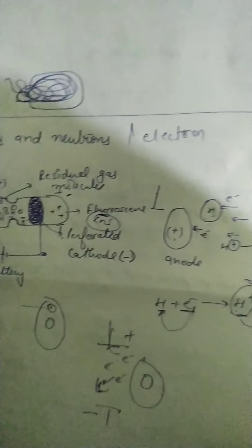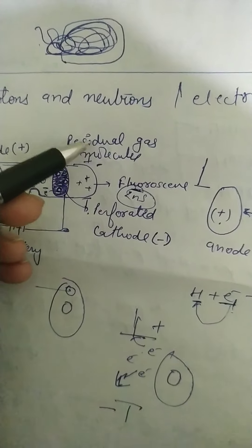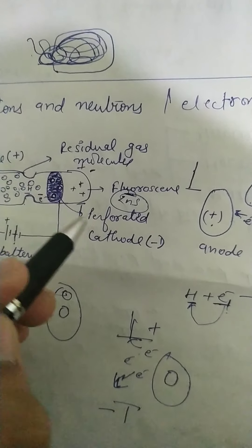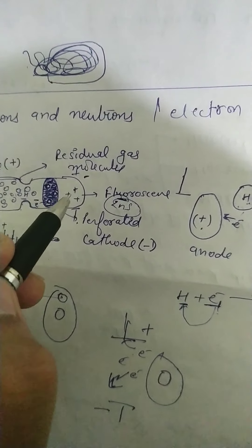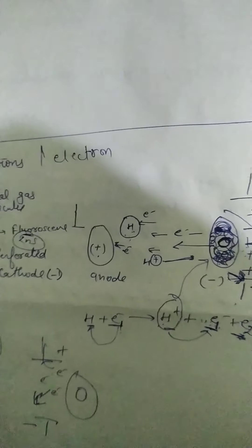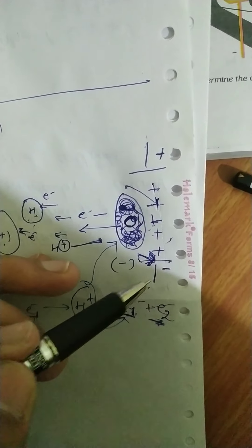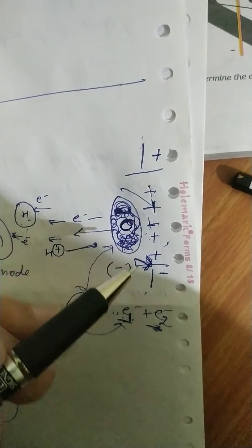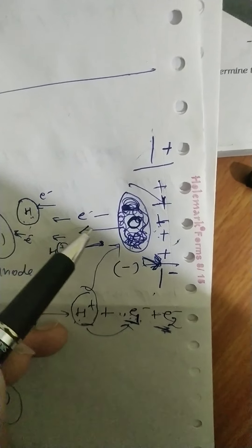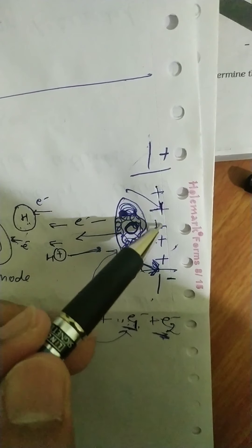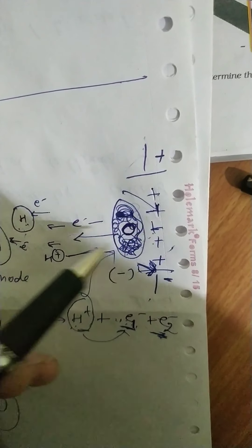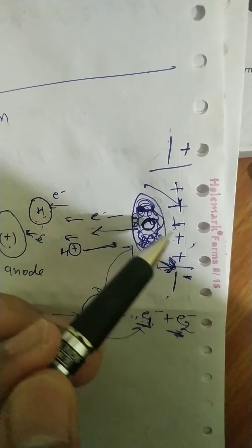So to understand why there is fluorescence — the scientists knew there was bombardment or collision of some particles, causing the fluorescence. To know the charge on these particles, they applied an electric field. When they applied the electric field — here a positive terminal, here a negative terminal — the H⁺ ions were attracted towards the negative terminal. So from this, they understood that there was formation of a positive ion.